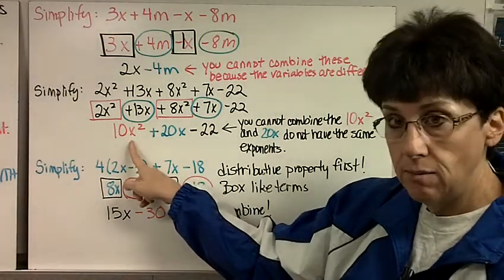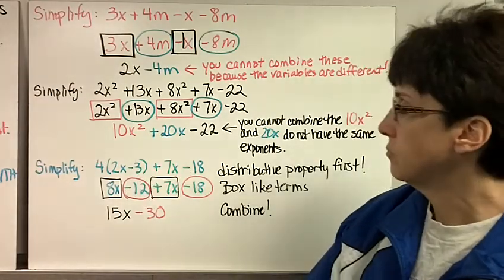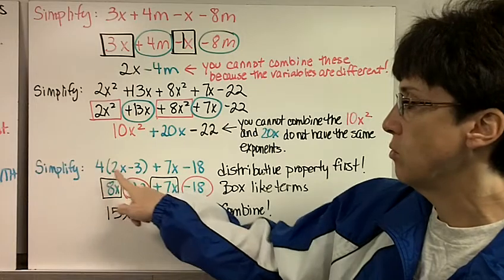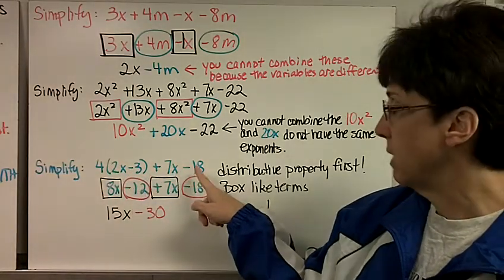Remember, like terms have the same variable raised to the same exponent. Here's one more problem. Simplify 4 times the quantity 2x minus 3 plus 7x minus 18.